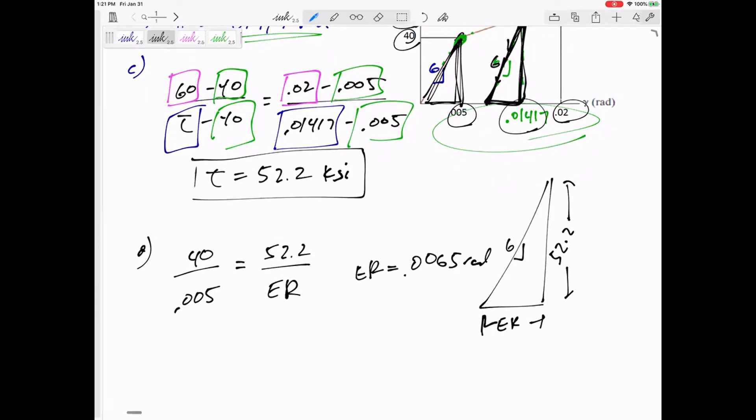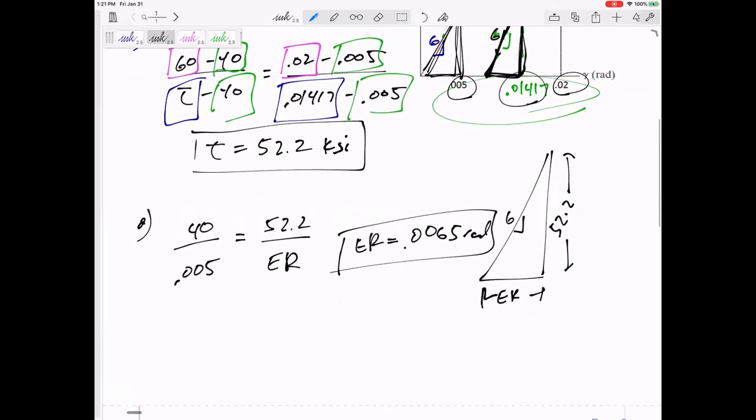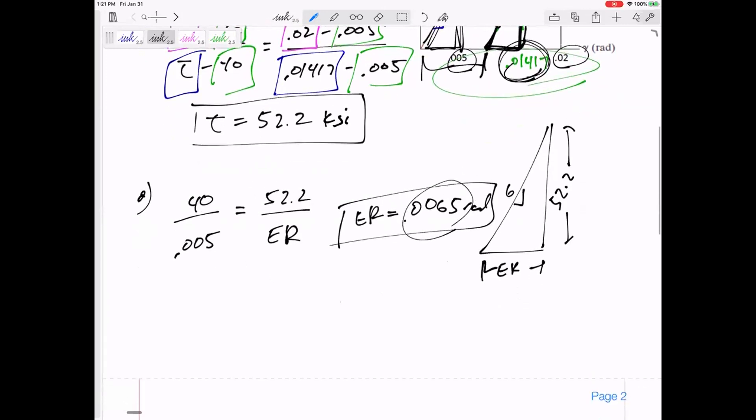What does the question ask for? Determine the elastic, okay. So yeah, that's part of determine the elastic recovery and the permanent deformation. What is a permanent deformation? Listen up. If I started right here at 0.01417 and I recovered 0.0065, then whatever's left would be the permanent deformation. So 0.01417 minus 0.0065. So I'm permanently deformed 0.0077 radians. So that's a permanent set or permanent deformation.